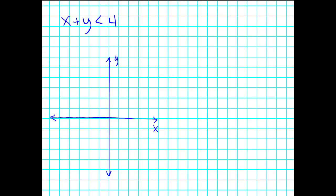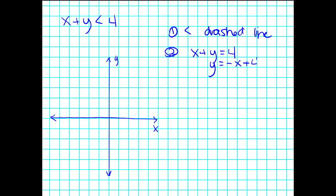Let's take the example: X plus Y is less than 4. First step is to recognize if it's going to be a dashed or a solid line. Because it is less than, it's going to be a dashed line. Second, we're going to figure out the boundary: X plus Y equals 4. I'm going to solve this for Y — it's easier to graph that way. So I get Y equals negative X plus 4.